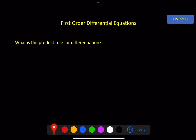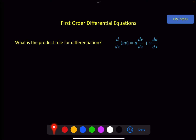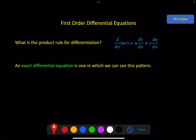This method comes from considering the product rule for differentiation. The product rule is this. And the idea behind an exact differential equation is if you can see this pattern, then you know it has come from something like this. And integrating this will get you directly to uv. So the pattern I'm referring to is if you can see in the first term a function that has its derivative in the second term, and in the second term a function that has its derivative in the first term. That's the pattern we're looking for.